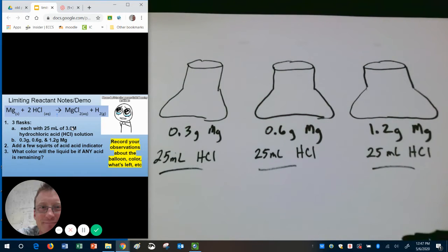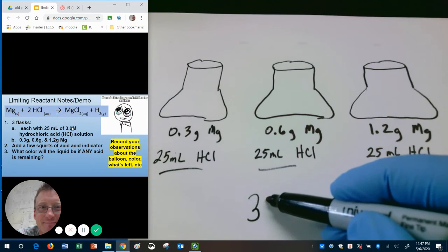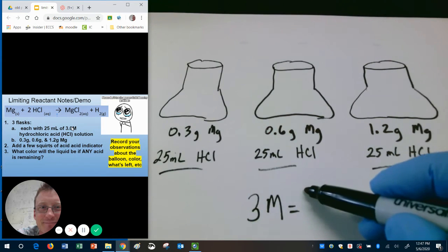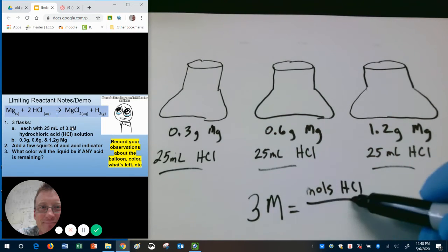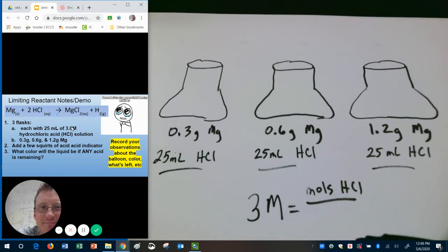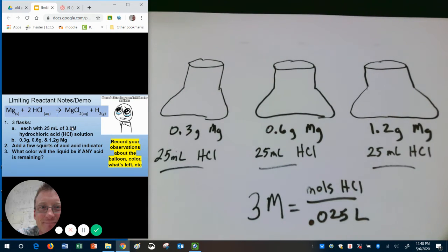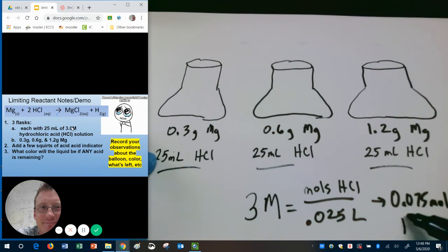The equation for molarity is moles over liters. So we're going to say moles of HCl over, and notice I said liters, not milliliters. So I have to remember to convert 25 milliliters into liters, that will give me 0.025. On my calculator, I'm going to multiply both sides by 0.025 to get me my answer. We have 0.075 moles of HCl. So each of these has 0.075 moles of HCl.